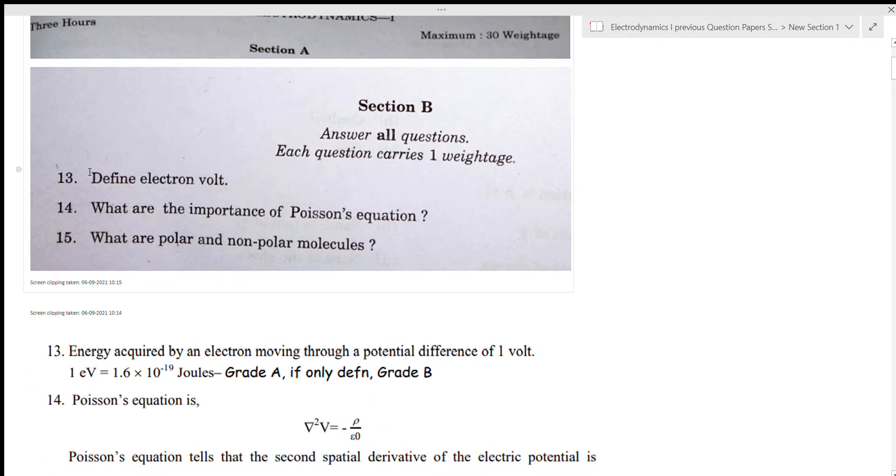The first question is to define electron volt. Energy acquired by an electron moving through a potential difference of 1 volt. 1 electron volt is equal to 1.6 into 10 raise to minus 19 joules. That is how much energy is acquired by that electron.